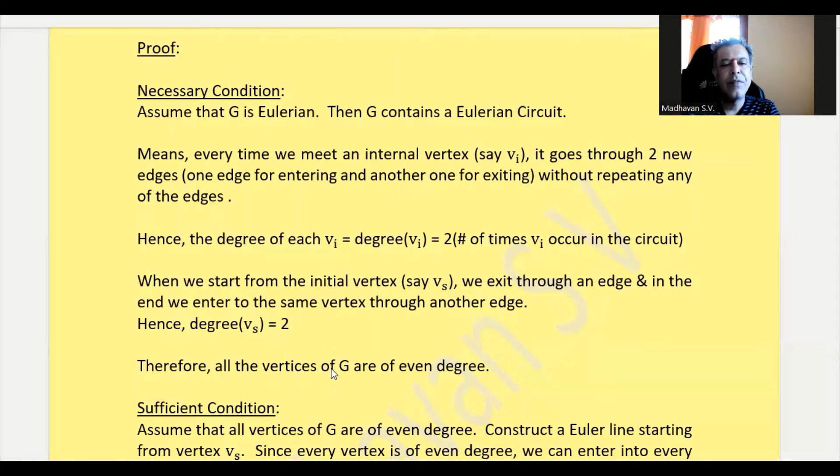Therefore, all the vertices of G are of even degree, because here it is two times something, and here it is two itself. That means the final degree will also be even only.